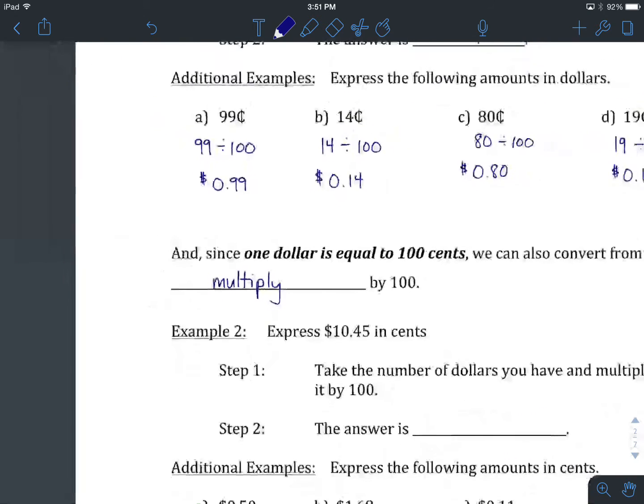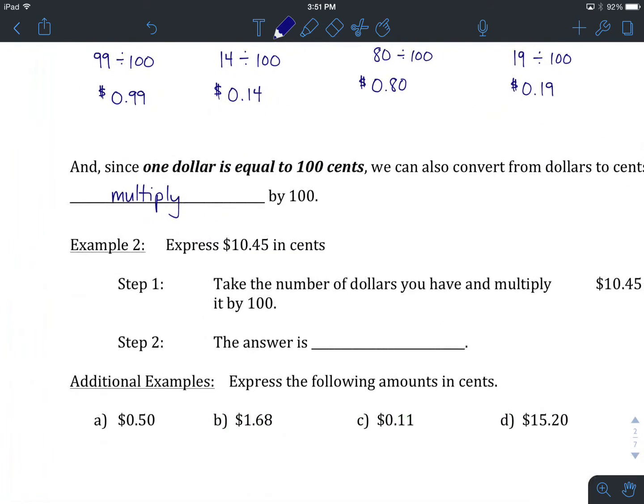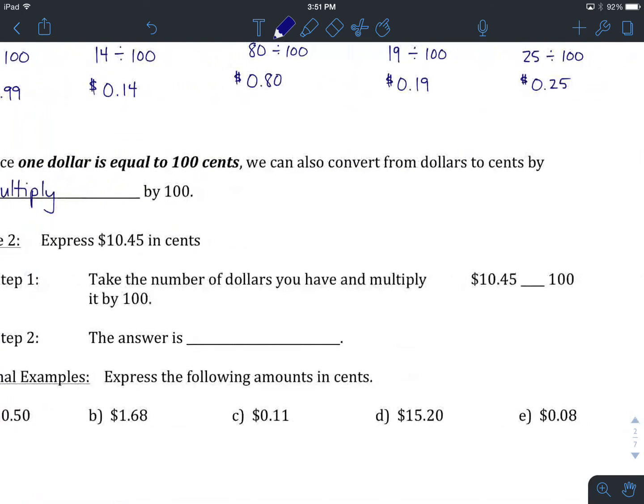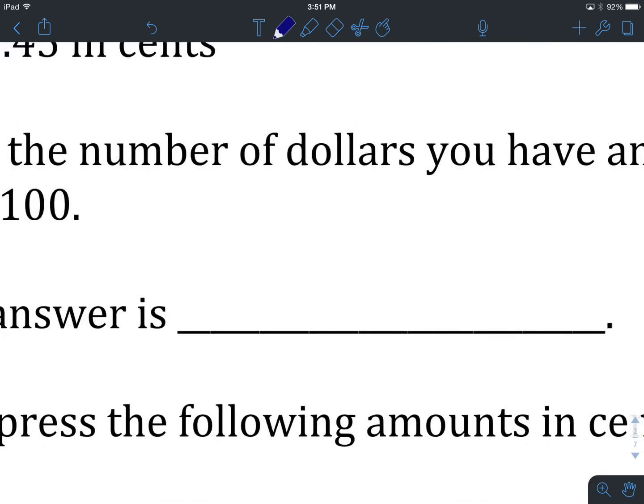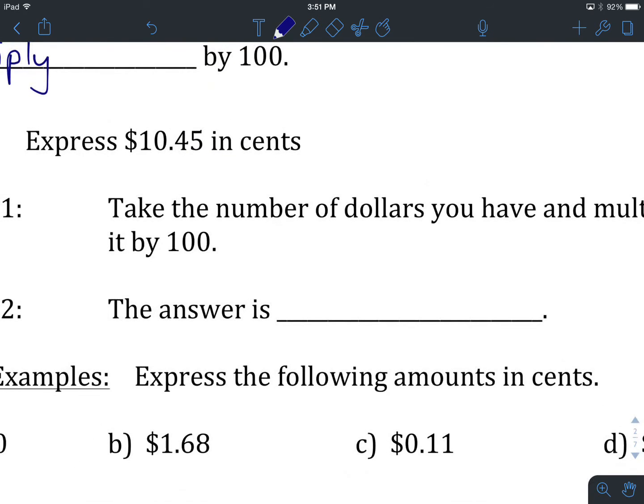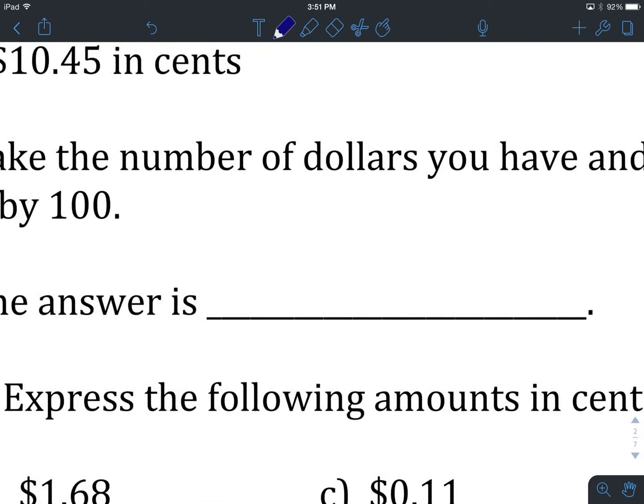Let's take a look at our first example. We've been asked to express $10.45 in cents. You take the number of dollars that you have, which is $10.45, and multiply it by 100. Again, if you've got a calculator, you're welcome to use it. If you're using mental math with shortcuts for multiplying by powers of 10, that's fine too. Our answer then is, in cents, 1,045 cents.